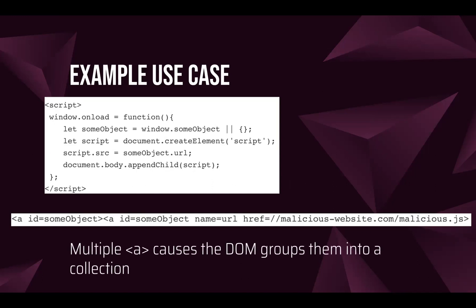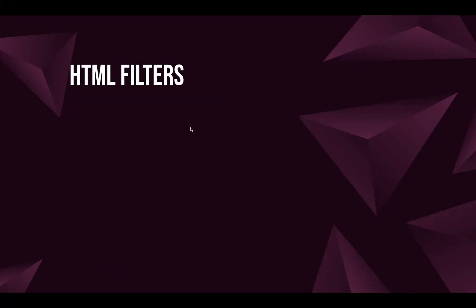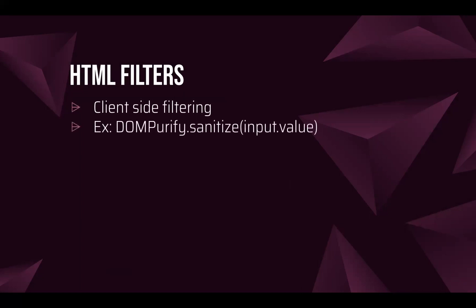Having multiple anchor tags causes the DOM to group them into a DOM collection, and that's why you're able to get an object from window.someObject. You'll be trying this out a bit later. To avoid this, many sites use DOMPurify filters, and everything here is done on the client side.